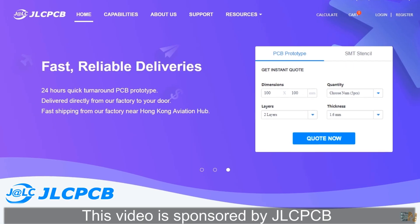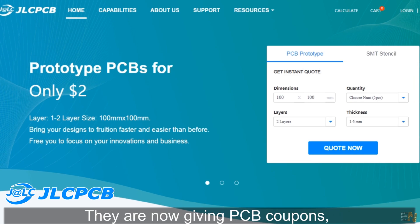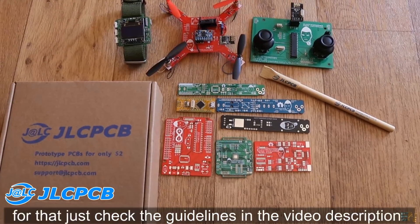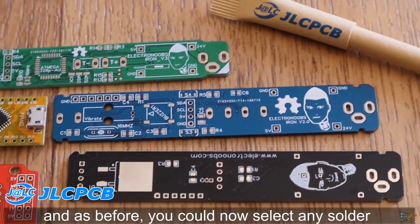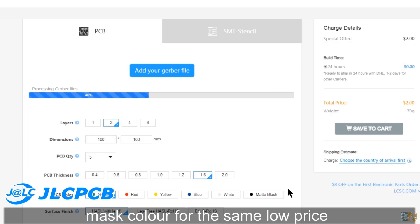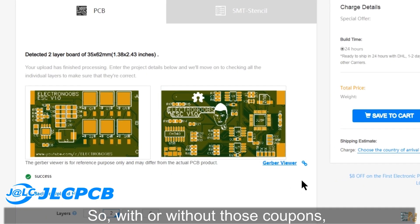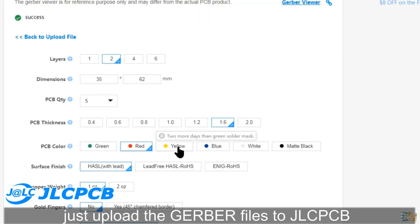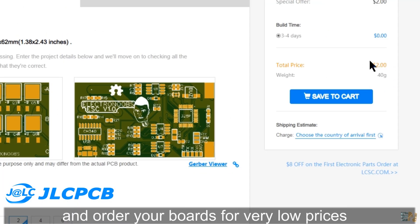This video is sponsored by JLCPCB. They are now giving PCB coupons, so for that just check the guidelines in the video description and as before you could now select any solder mask color for the same low price. With or without those coupons, just upload the Gerber files to JLCPCB and order your boards for very low prices.